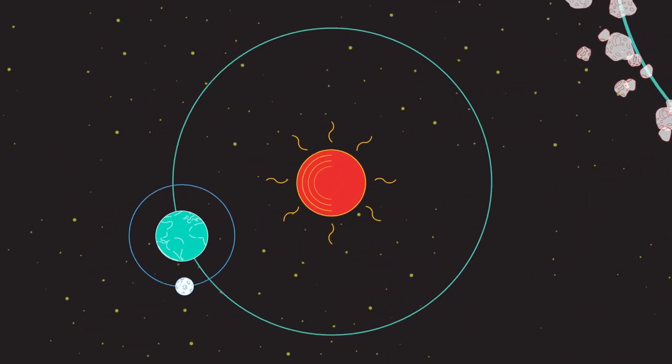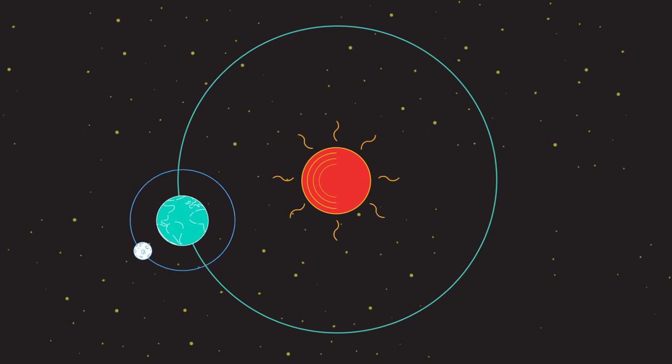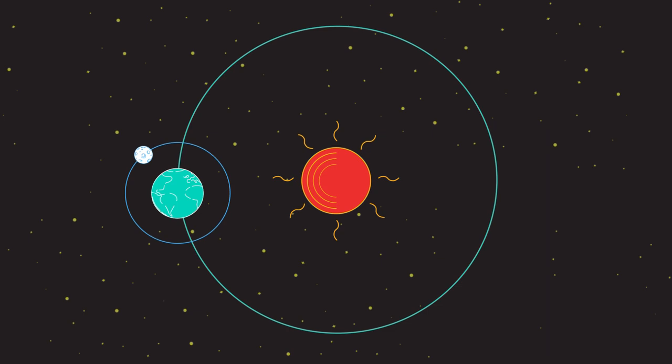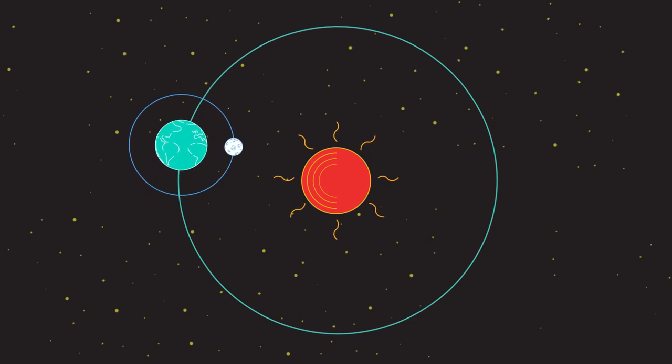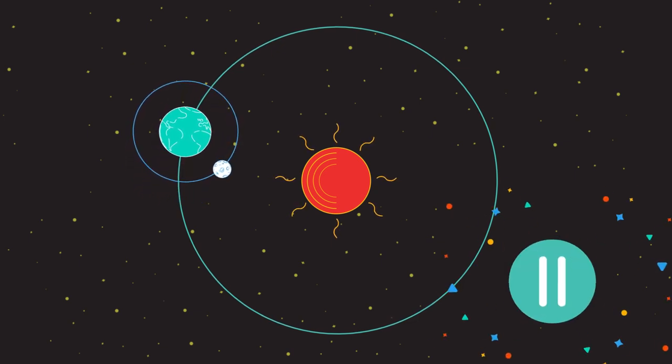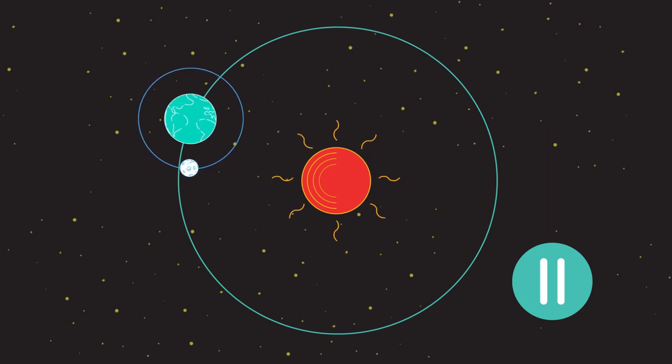A moon is a natural satellite. It's a body which orbits a planet, and so of course is part of the solar system. As you will have seen, some of the planets have a large number of moons, and some none at all. Stop the video if you want to go back and look.